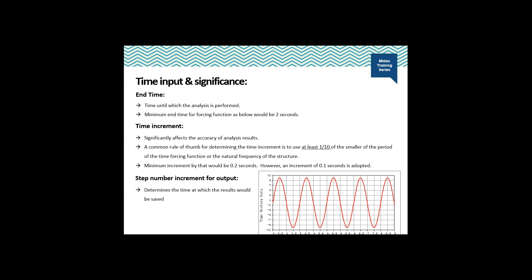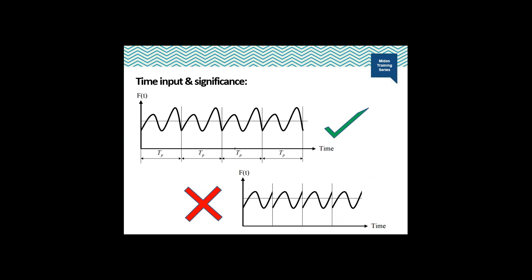The step number for output determines the time at which the results would be saved. Looking at the image at the top, the force plot of the periodic function is provided where Tp is the time period. If the end time is kept less than Tp, Midas will consider the loading only up to that point — the peak force itself may not be considered. So the end time should be a multiple of the time period of the forcing function, and the period of the forcing function should be a multiple of the time increment.